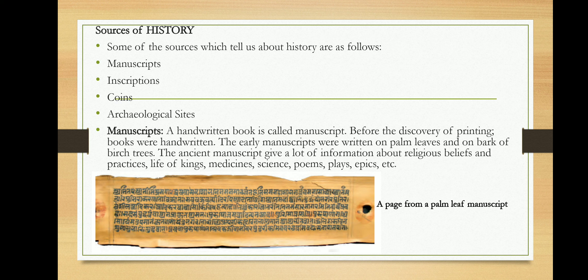Let us understand the sources from which history is drawn. There are four main sources: manuscripts, inscriptions, coins, and archaeological sites. Manuscripts are handwritten records on the bark of trees. In the past, people wrote on tree bark and passed these down to their families. Manuscripts contained praises of kings, practices, poems, plays, epics, and more.